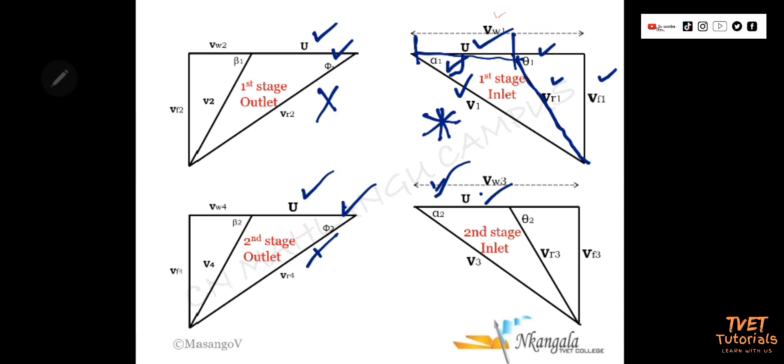Once you are done with that, you move to the outlet. In the outlet, we have only two data points. We need the third one, which will come from Vr1. Now that we have Vr1, we use it to calculate Vr2. Remember the equation is Vr2 equals k times Vr1. Now you have Vr2, phi 1, and u. You are able to complete the outlet of the first stage. Then you will find Vw2, V2, and Vf2.